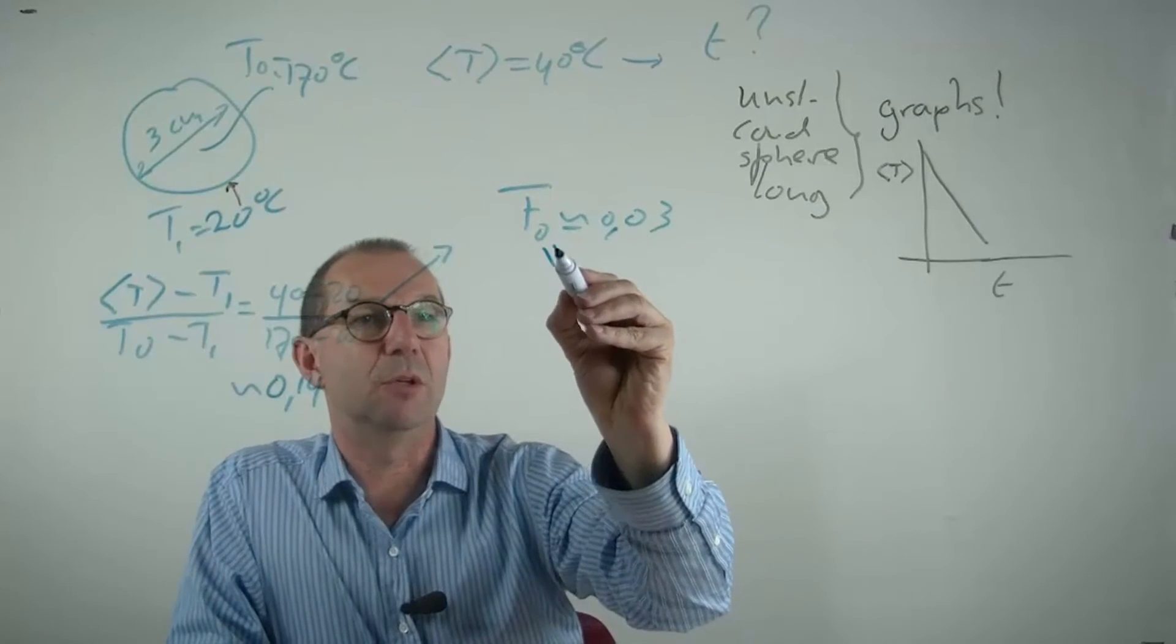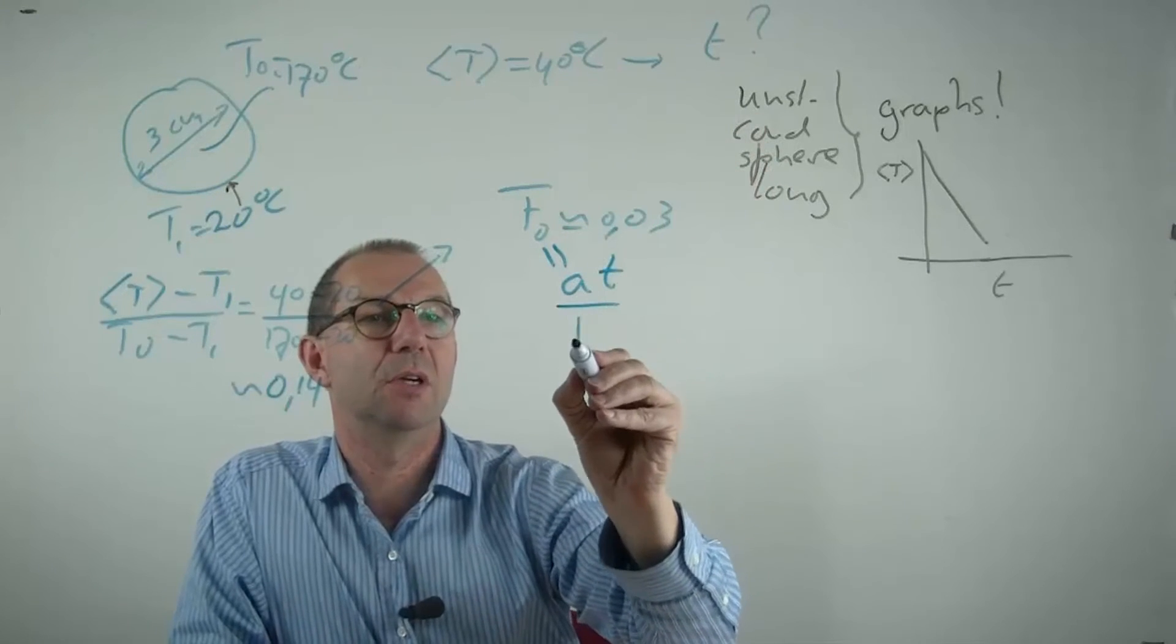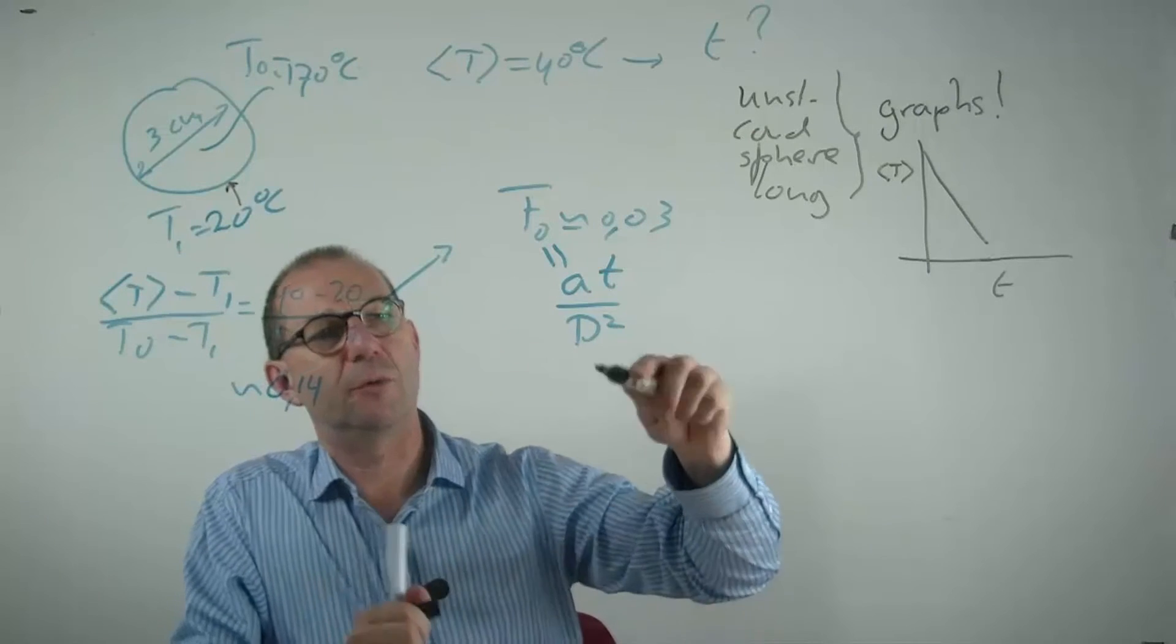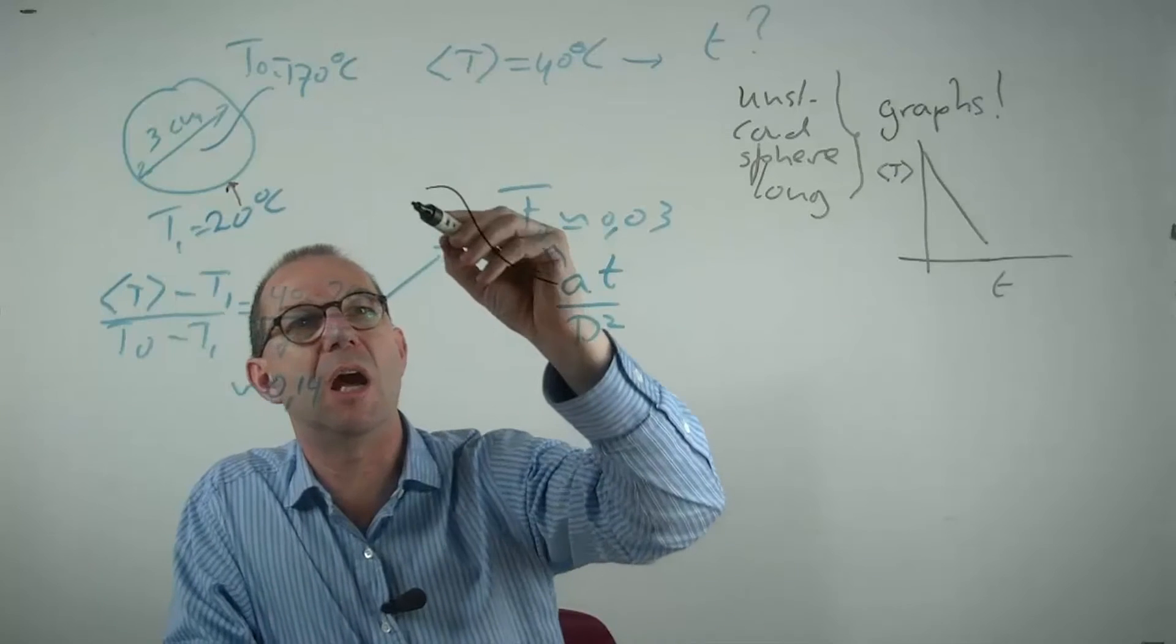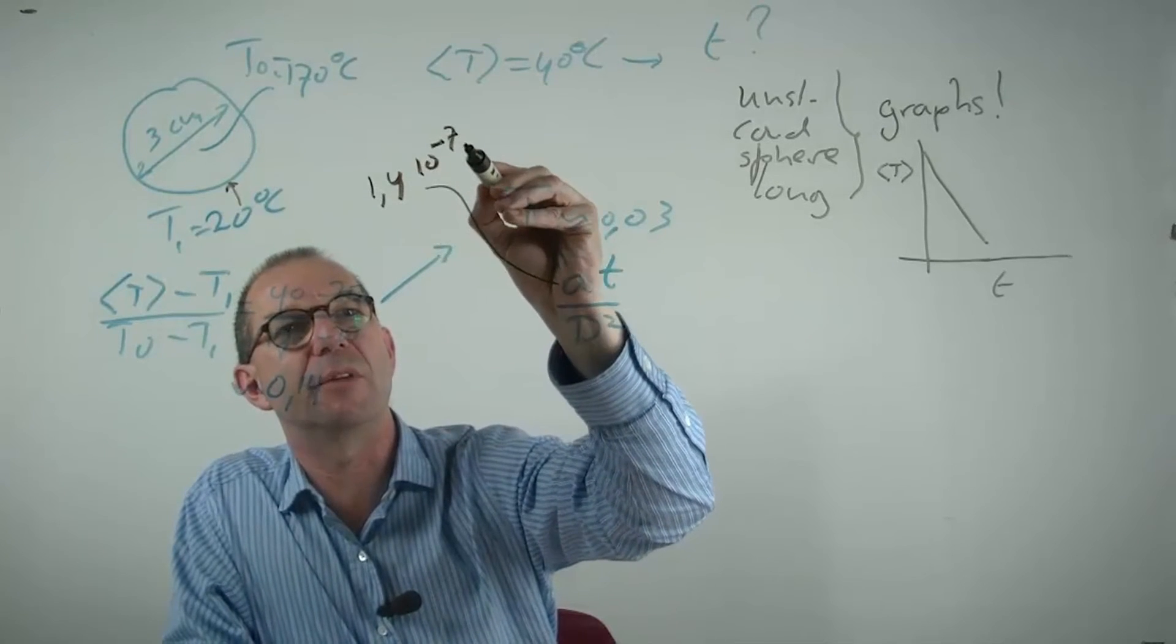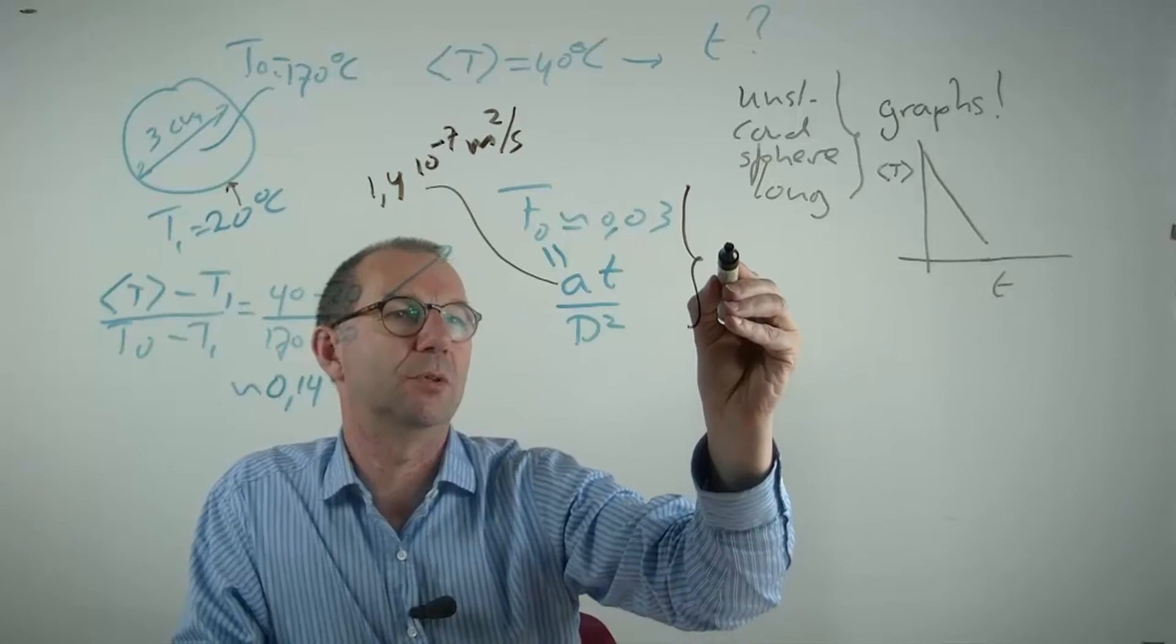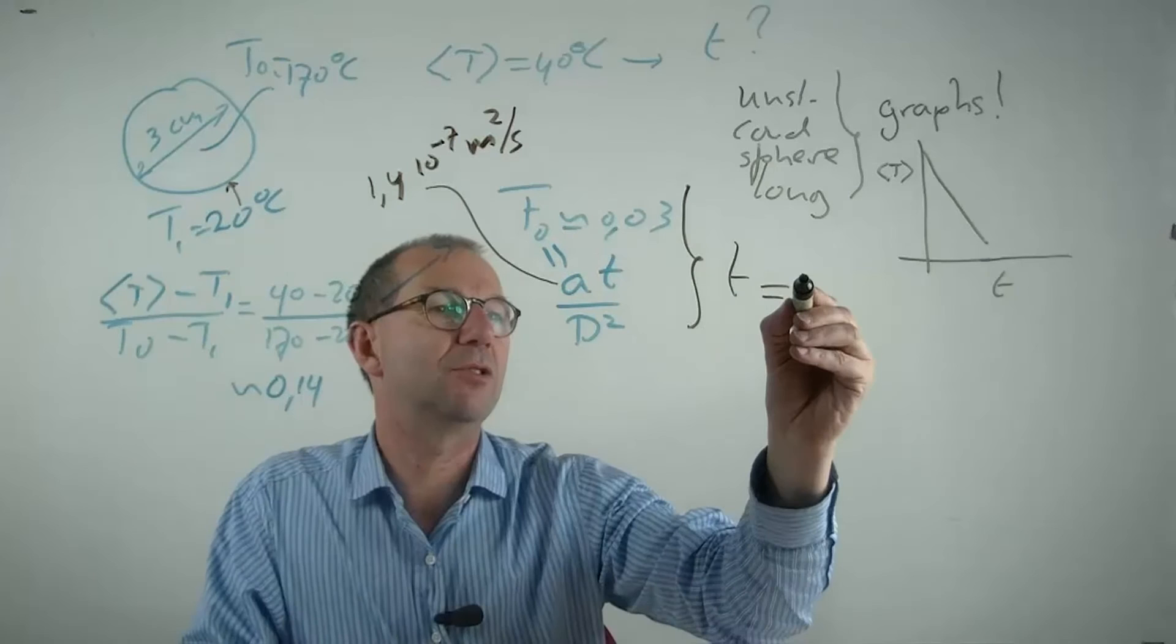And this is equal to α, the thermal diffusivity, times the time that we would like to compute divided by the diameter squared. For most foods, they have water-like properties. And this α is 1.4 × 10^-7 meter squared per second. From this I can compute the cooling time required. That is about 200 seconds.